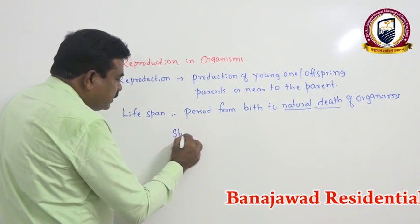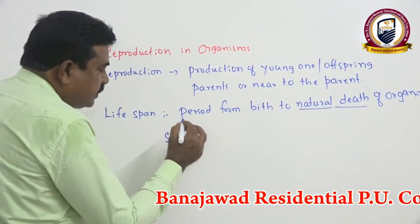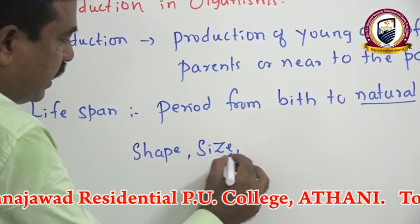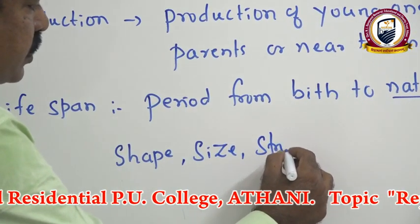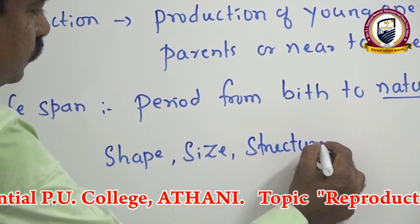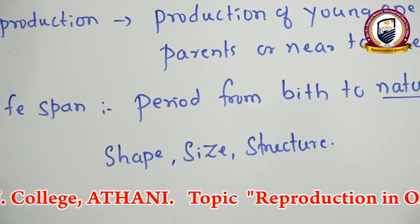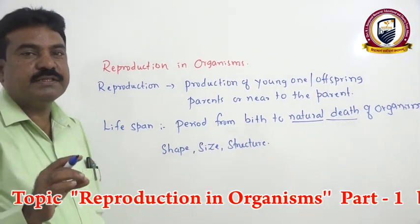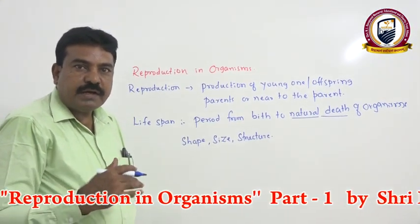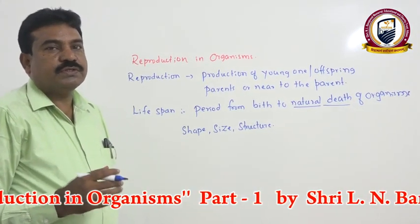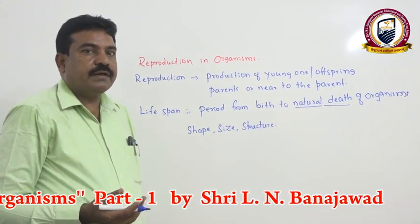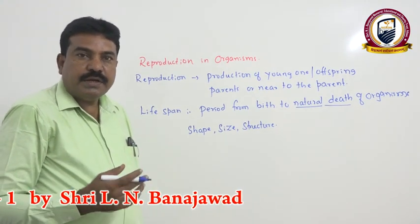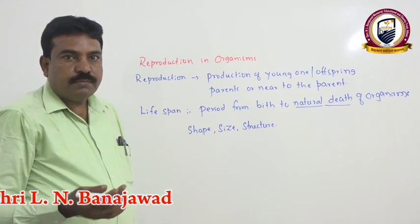The life span of an organism does not depend on the shape, size, or structure of the organism. For example, the crow and the parrot have roughly the same size, but the parrot's life span is more and the crow's is less. Similarly, take mango and banyan tree — roughly the same size, but the banyan tree's life span is more and mango's is less.